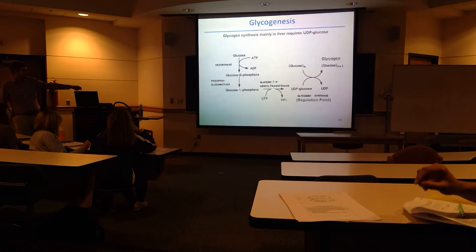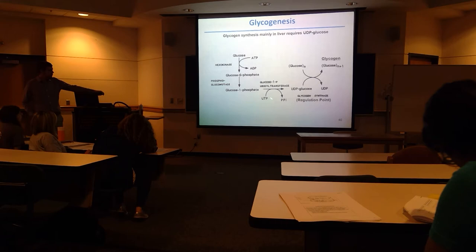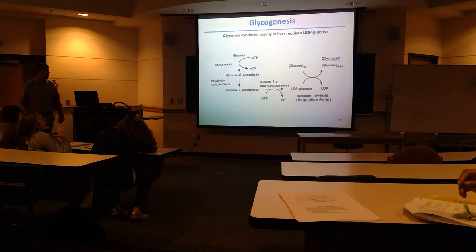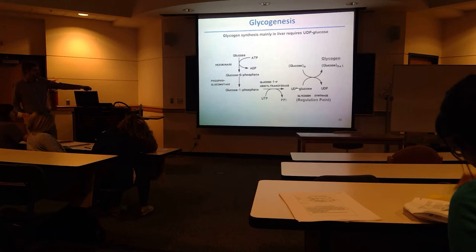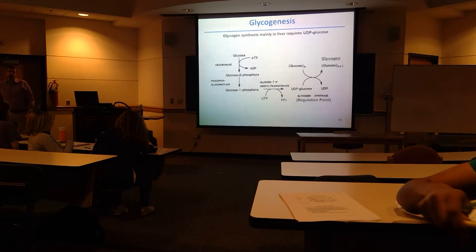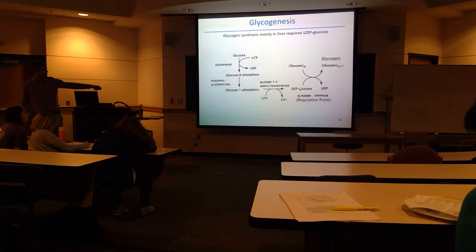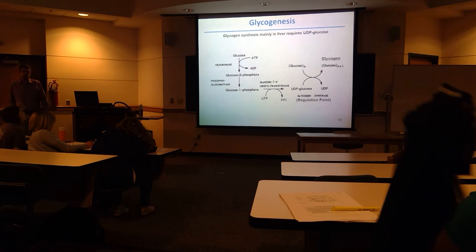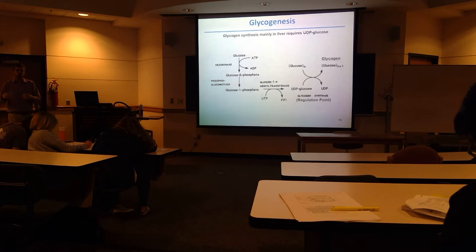Then we need to take glucose-1-phosphate through a somewhat unique step. Glucose-1-phosphate uridylyltransferase takes UTP and adds it to glucose to make UDP-glucose. Two phosphates are released as pyrophosphate, and UDP-glucose is formed. The UDP is just a way to activate the glucose so that you can link it together and form the alpha-1,4 and alpha-1,6 linkages found in glycogen.